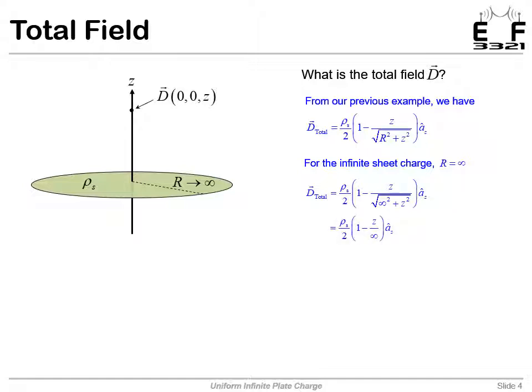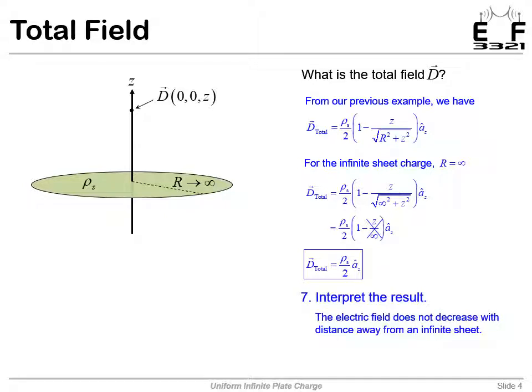So in fact, that term vanishes. And we just end up with the surface charge density divided by two. Notice this is a uniform field. It does not decay with distance, which is very interesting. So for the infinite surface charge, no matter how far away you are from that, the electric field has the same amplitude.